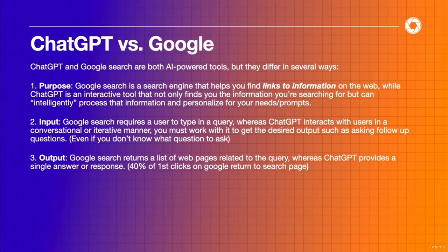Google searches return a list of web pages, where ChatGPT provides a single specific response. An interesting statistic: 40% of first clicks on a Google search result in that user returning to the search page — meaning you're probably not finding the specific answer on the first link you clicked. ChatGPT will serve you that information on the first search with the correct prompts, versus requiring a second, third, or fourth search.